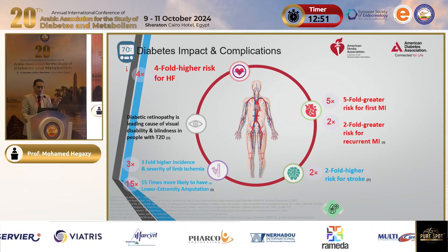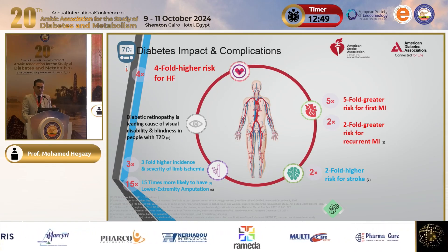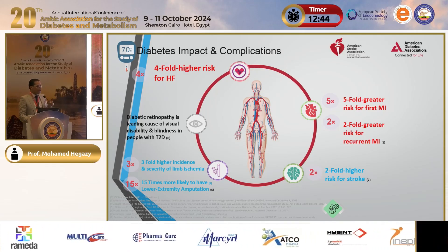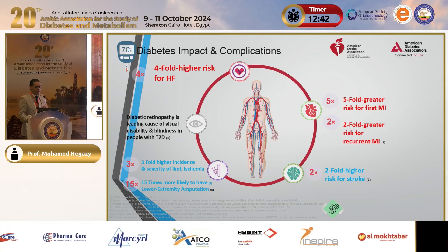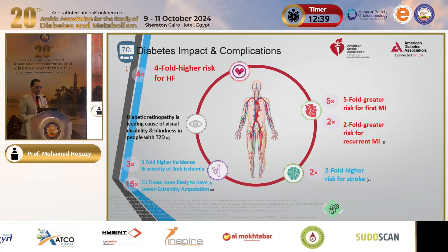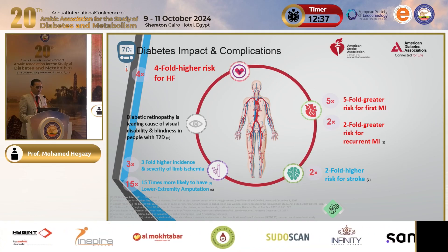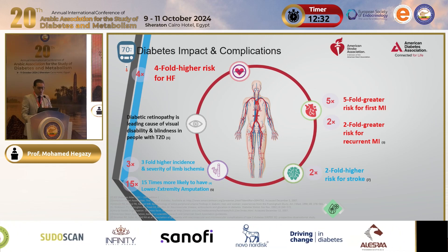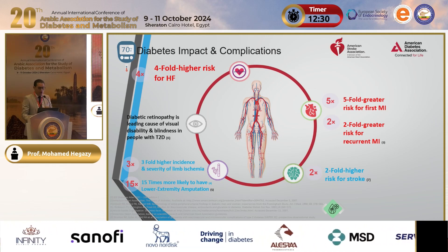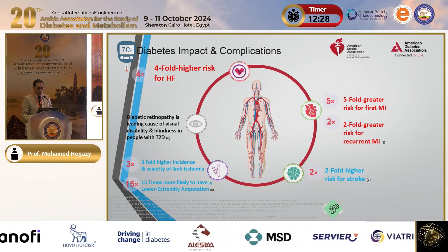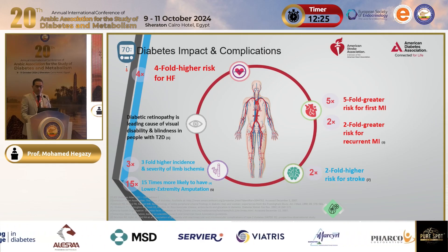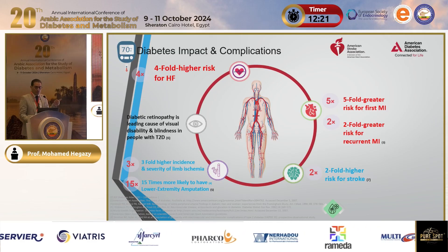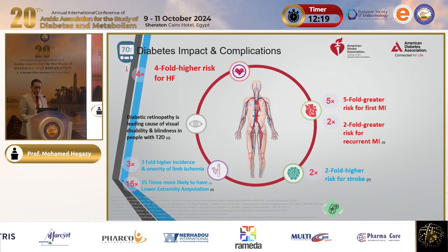Our main problem in diabetes is its complications. Patients with diabetes have a fourfold higher risk for heart failure; diabetic retinopathy is a leading cause of visual disability and blindness; there is a threefold increase in limb ischemia severity; a 50 percent increase in likelihood of lower extremity amputation; and a fivefold greater risk for first myocardial infarction.